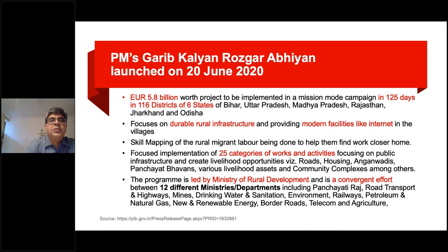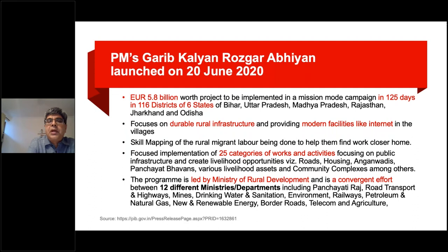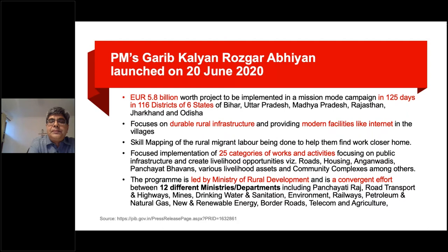The Garib Kalyan Rojgar Yojana is worth about 5.8 billion euros and focuses on six states where the highest numbers of return migrants are expected. One hundred and sixteen districts have been selected where, within 125 days, this money has to be targeted and spent to create durable rural infrastructure, including modern facilities like internet — since social enterprises and social services are also expected to be driven by internet growth in rural India. Skill mapping of rural migrants is being done to match them with opportunities as they open up. About 25 categories of works and activities — mostly roads, housing, creches, panchayat buildings, livelihood assets, and community complexes — are to be built. This is led by the Ministry of Rural Development, bringing together 12 different ministries and departments in a mission mode.